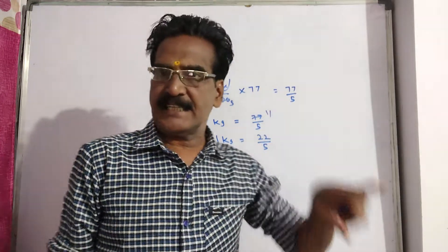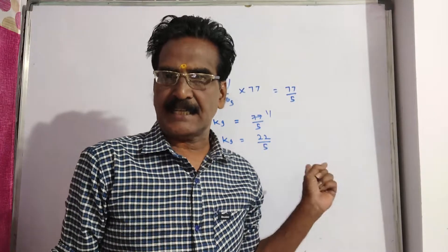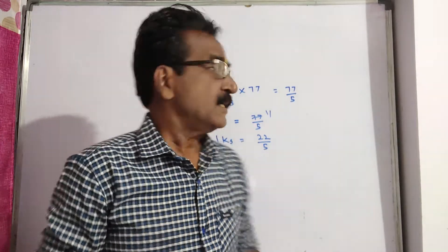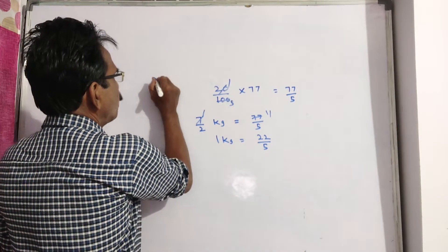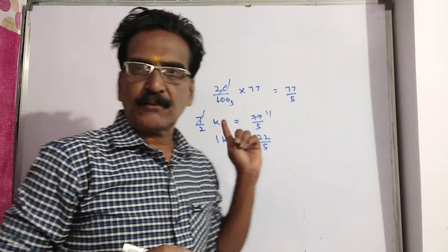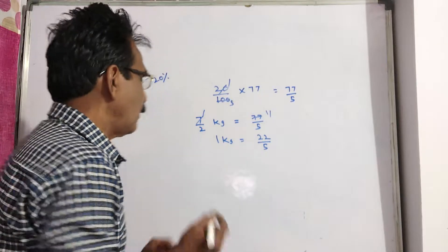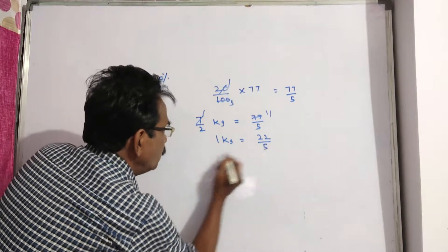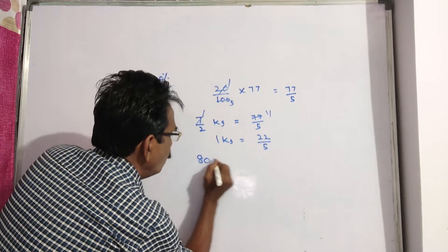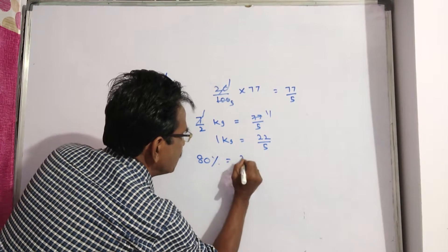This is after reduction. We want the original price. So, how much is the reduction? 20% is the reduction. After 20% reduction, the price is 22 by 5 now. So, this 22 by 5 is equal to 80% of the original price.